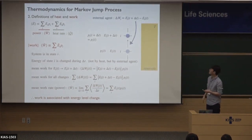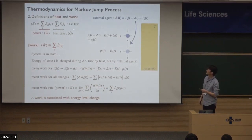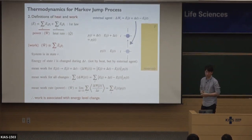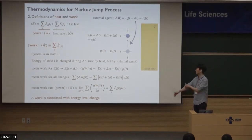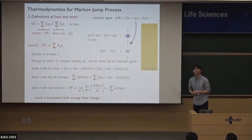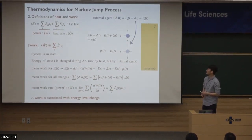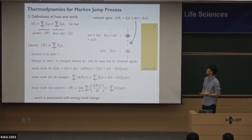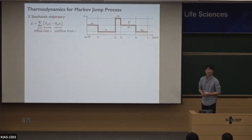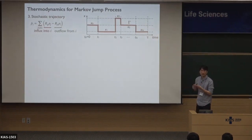This is the thermodynamic first law in the Markov jump process — the master equation system. We found the thermodynamic first law: how to define work and heat in this discrete state jump system. Now let's turn to how to evaluate the path probability in this system.